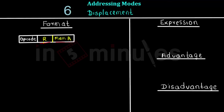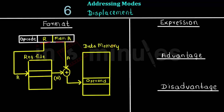Let's quickly look at the implementation. R is used to access a particular register from the register file, and the value from that register is added to the memory address to calculate the actual effective address of the operand. This type of execution is used where segmentation is used in memory or different base registers are present inside the memory organization.